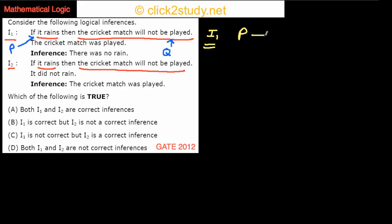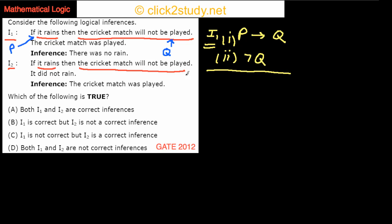For I1, we have P implies Q, where P is 'it rains' and Q is 'the cricket match will not be played.' What we know is that the cricket match was played, which means not-Q is true. The question is: can we infer not-P — that there was no rain — from what is given?